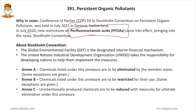The Stockholm Convention provides three annexes — Annex A, Annex B, and Annex C. Annex A contains chemicals that must be completely eliminated by member countries. Annex B contains chemicals that must be restricted, not necessarily eliminated. Annex C requires chemicals to be reduced. The Global Environmental Facility is the designated interim financial mechanism providing financial support, and UNIDO — the United Nations Industrial Development Organization — helps developing nations implement the measures.